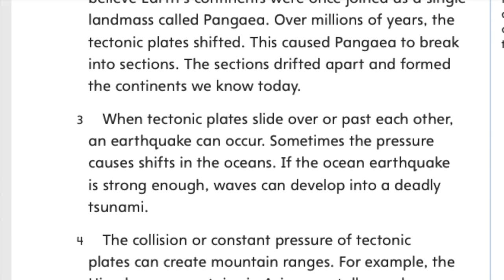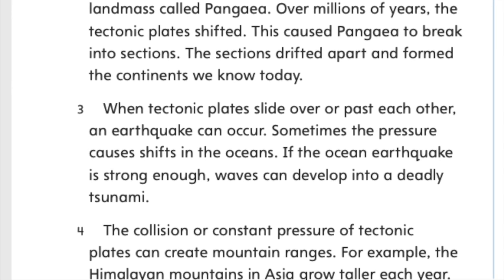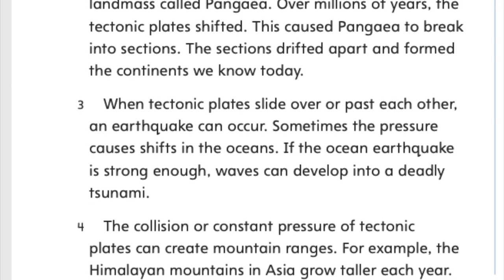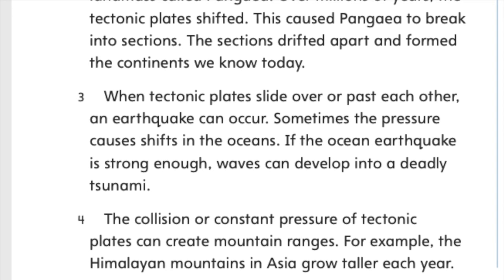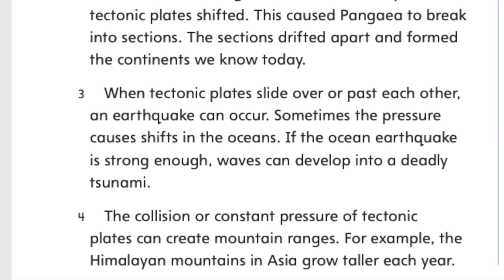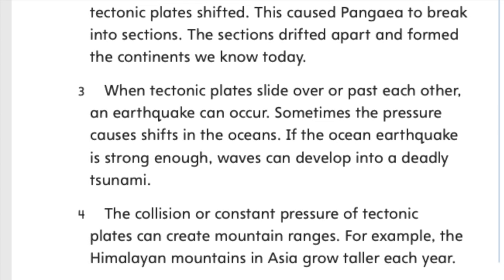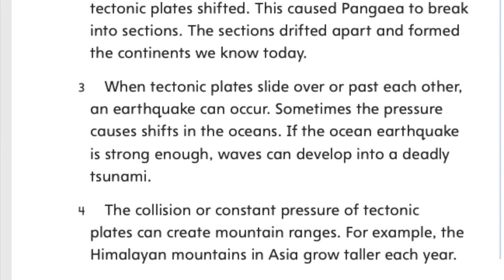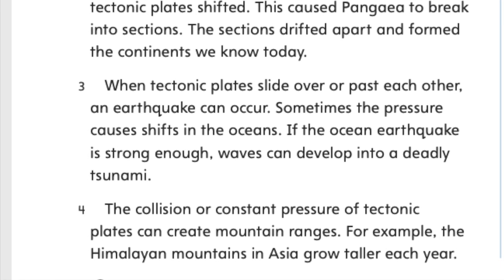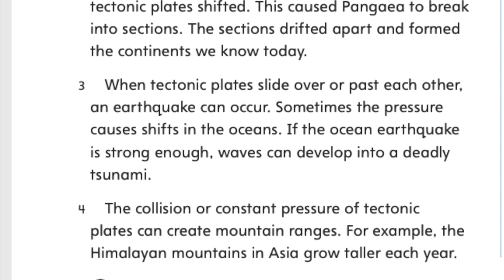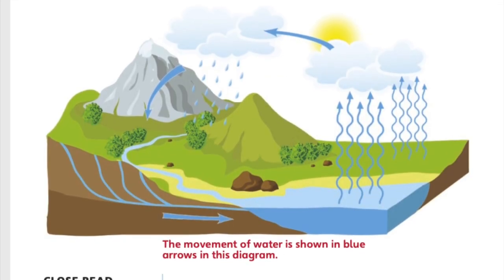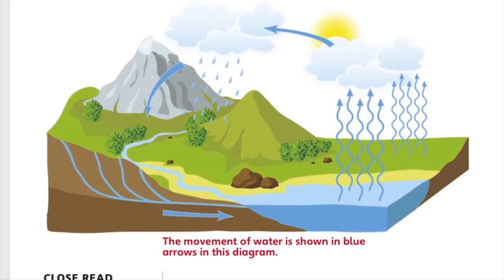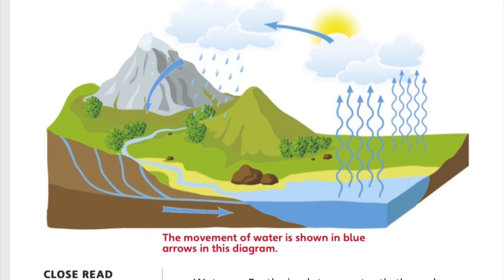The collision or constant pressure of tectonic plates can create mountain ranges. For example, the Himalayan mountains in Asia grow taller each year. Water on Earth circulates constantly through the water, or hydrologic cycle.